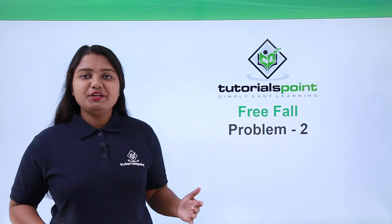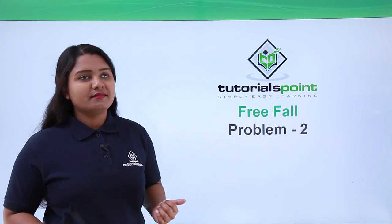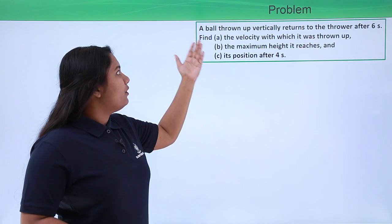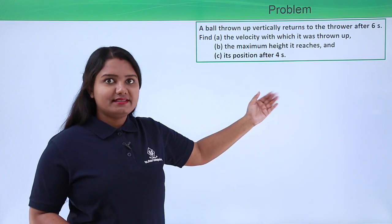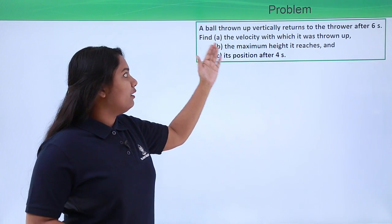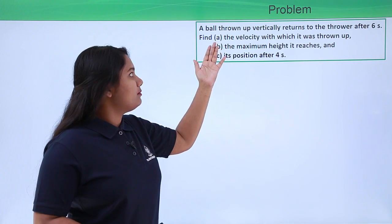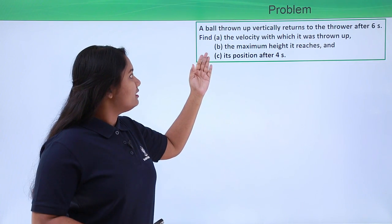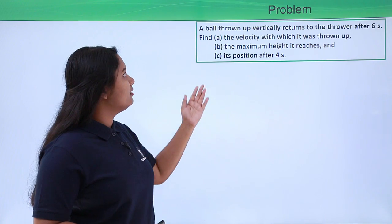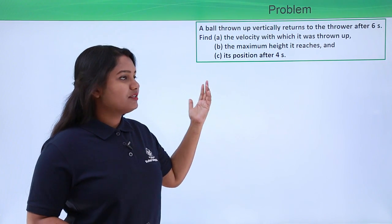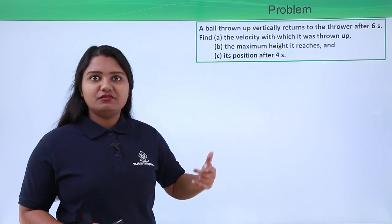Hello everyone. In this video we are going to solve another problem which is based on free fall. The problem is: a ball thrown up vertically returns to the thrower after six seconds. Find the velocity with which it was thrown up, the maximum height it reaches, and its position after four seconds.